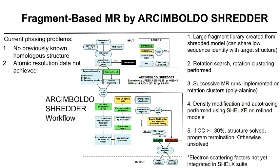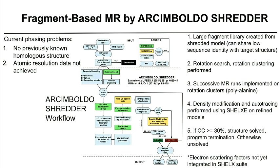Many micro-ED data sets are not amenable to standard molecular replacement or direct method phasing — either because we don't have atomic resolution data or there's no previously known homologous structure. We turn to a fragment-based molecular replacement approach. A large fragment library is created from a shredded model that can share low sequence identity with your target; a rotation search and rotation clusters are generated, followed by successive molecular replacement runs on polyalanine models. Following density modification and auto-tracing, if the correlation coefficient is greater than 30 percent, the structure is marked as solved; otherwise it loops back to the next rotation cluster.